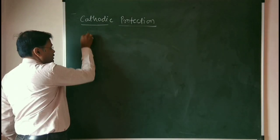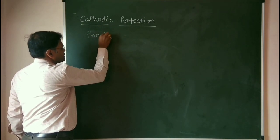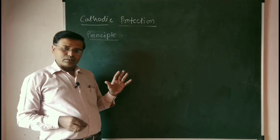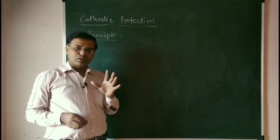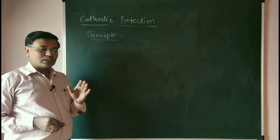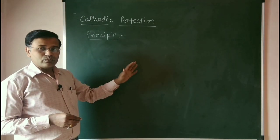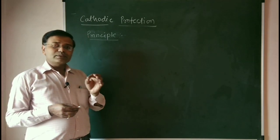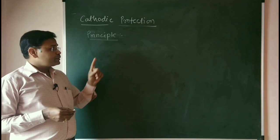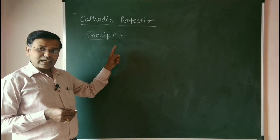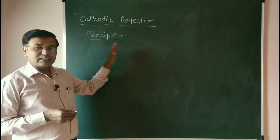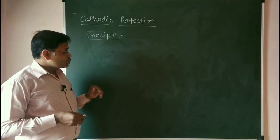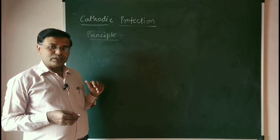The principle of this technique is that the metal to be protected from corrosion is forcefully made to act as cathode. It means if naturally corrosion is taking place, that metal is acting as anode. We have to make it act as cathode forcefully. This is the principle of the cathodic protection technique.